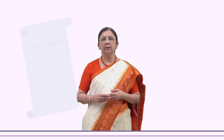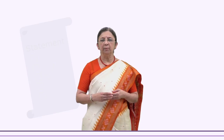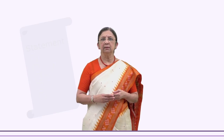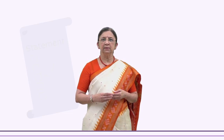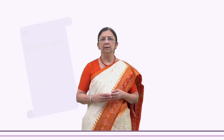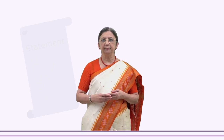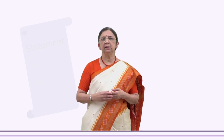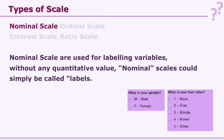There are four types of scales: nominal scale, ordinal scale, interval scale, and ratio scale. Let us see each one in detail. Nominal scale — it is not really a scale in the true sense; it is only a nominal scale.